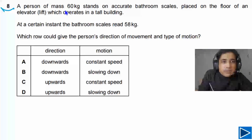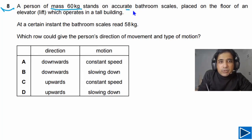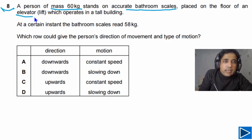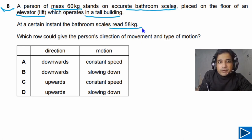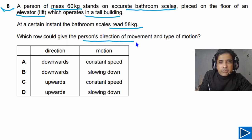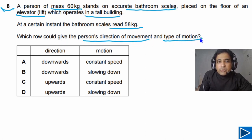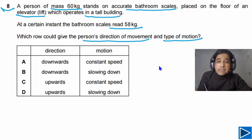For question number 8, it is given: a person of mass 60 kg stands on accurate bathroom scales placed on the floor of an elevator operating in a tall building. At a certain instance, the bathroom scales read 58 kg. We need to find which option gives the person's direction of movement and type of motion. Let's try to understand this by sketching a diagram.